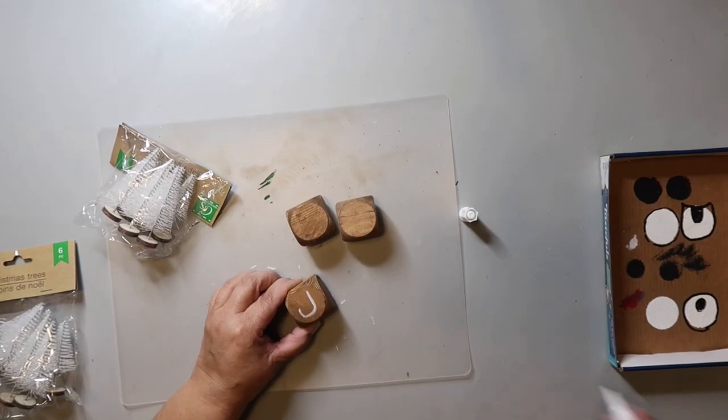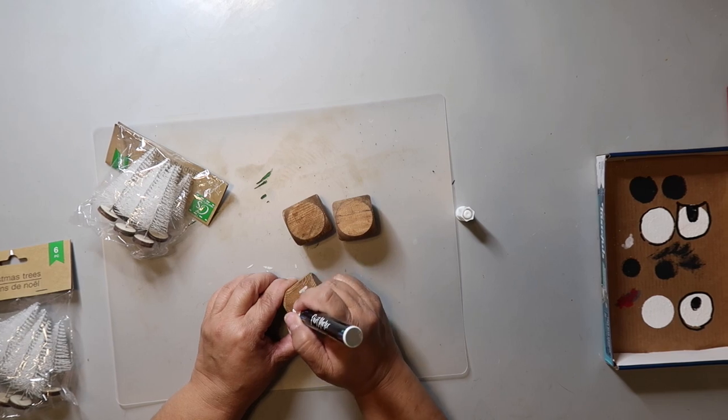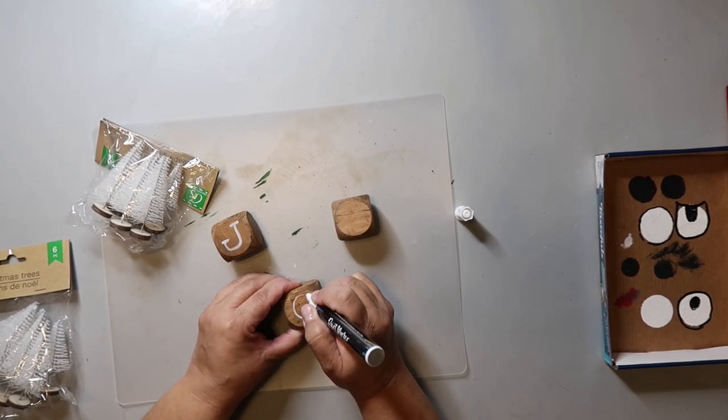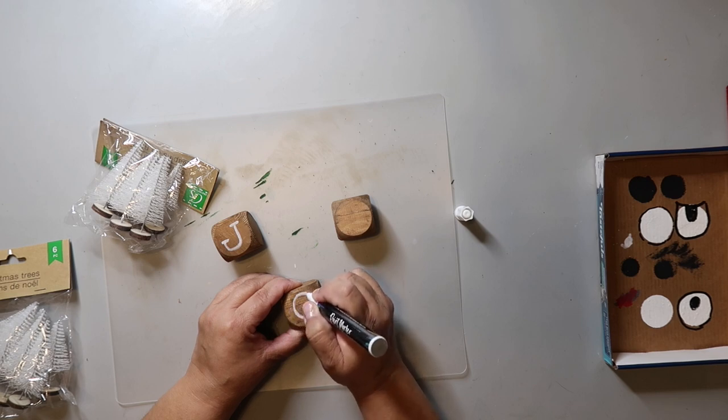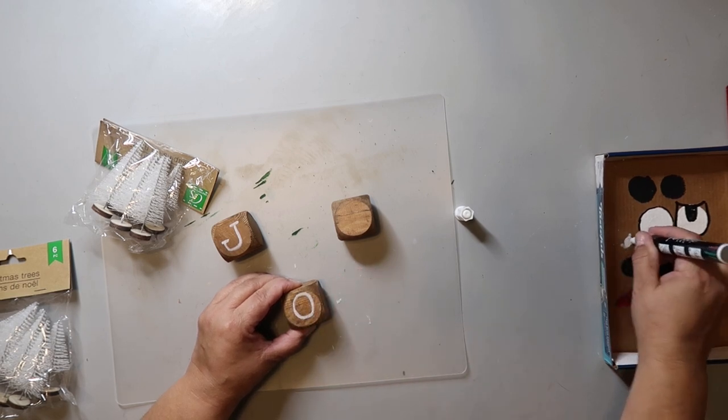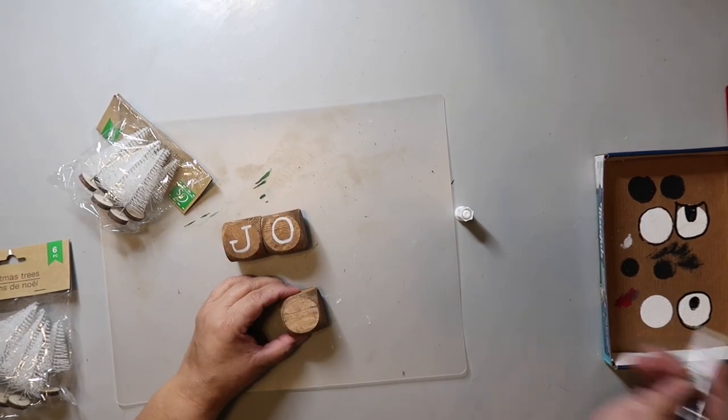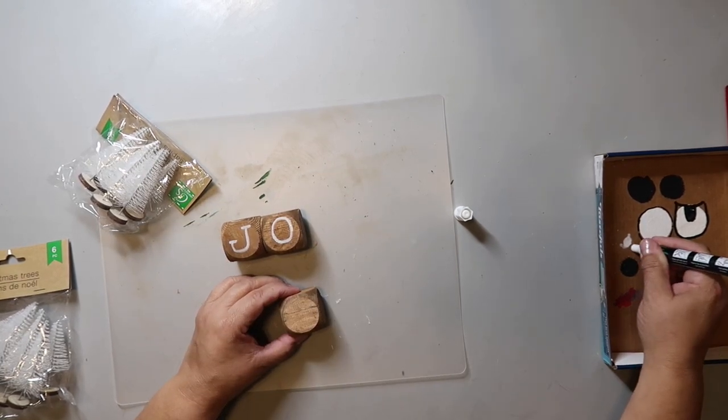I'm using a white paint pen to add the letters J, O, and Y to the cubes. And I'm just free handing it. And no, my handwriting is not perfect. It's not really supposed to be. So if you don't have a Cricut, do not let that stop you from creating. Free handing works just as well. And honestly, it makes it look more authentic.